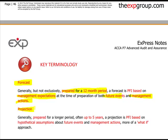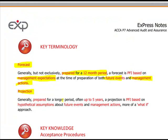A projection, however, is something generally prepared for a longer period - often up to five years. A projection is PFI based on hypothetical assumptions about future events and future management actions. It's more of a 'what if' approach: what if we did this, what if we did that. With many more assumptions and a longer period, it's going to be much harder to get realistic information, so cross-checking to as many different types of information as possible becomes more important.